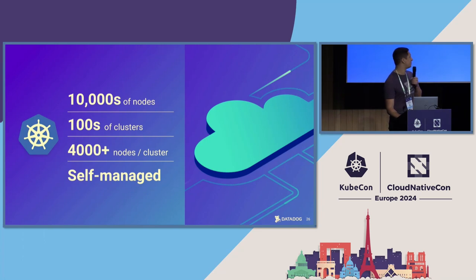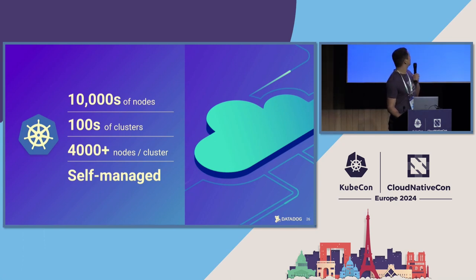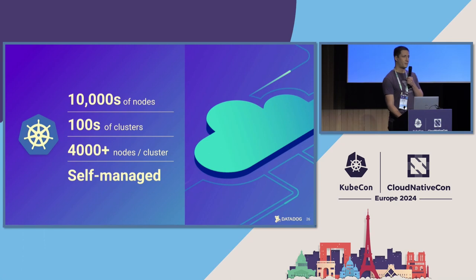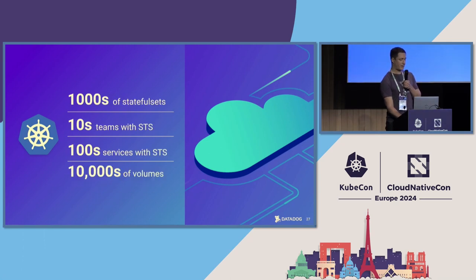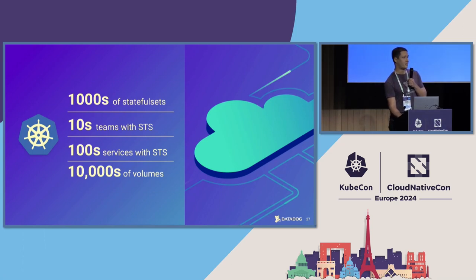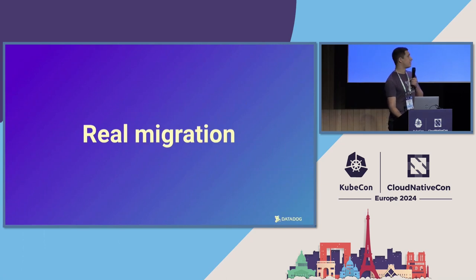What is our scale exactly? At Datadog we have self-managed clusters running on three different cloud providers — hundreds of different clusters representing tens of thousands of different services and tens of thousands of persistent volumes. So we needed a true migration that could work at our scale.